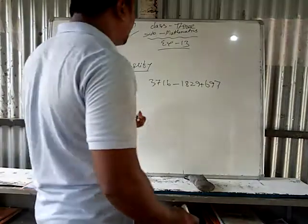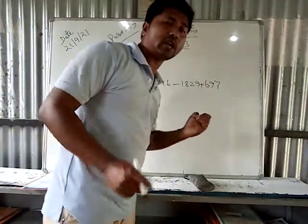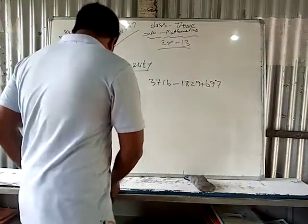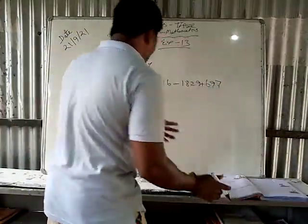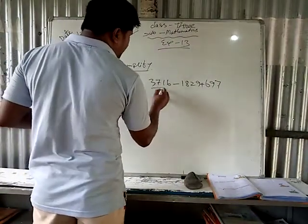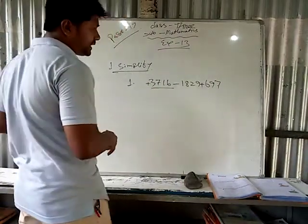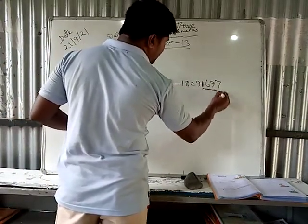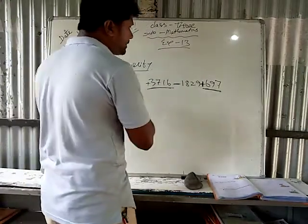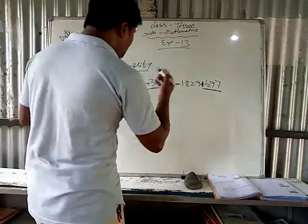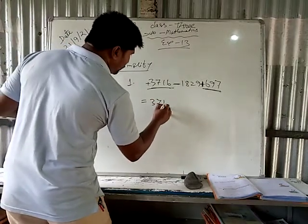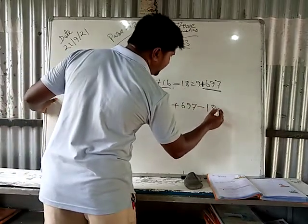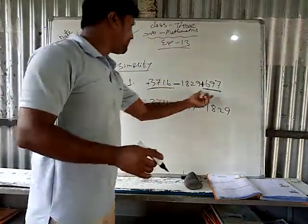My dear children, first you have to make sure about the question — what is the question — and after that make sure what you have to do. Before this first number, nothing is there, so the symbol is positive. Before this one, negative. Before this one, positive. These two positives will go to this side. So: 3716 plus 697, minus 1829. These two positive numbers I have written on this side.